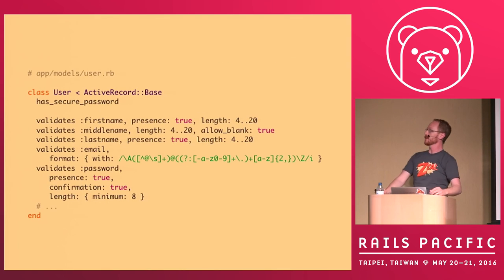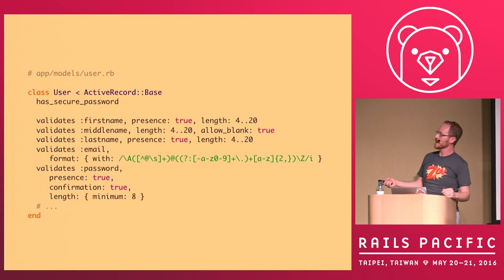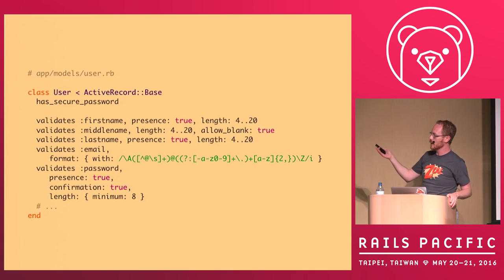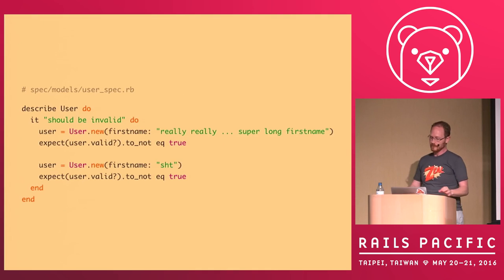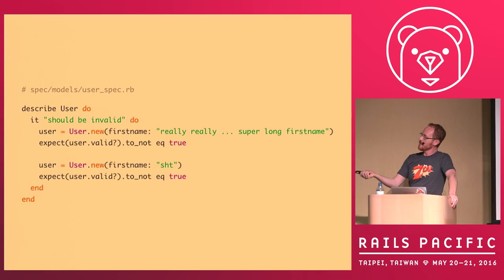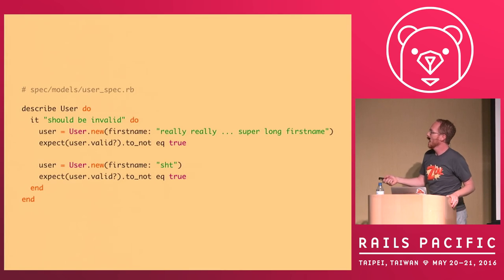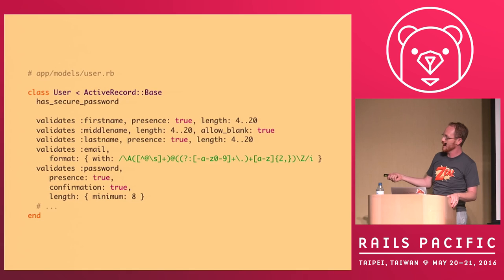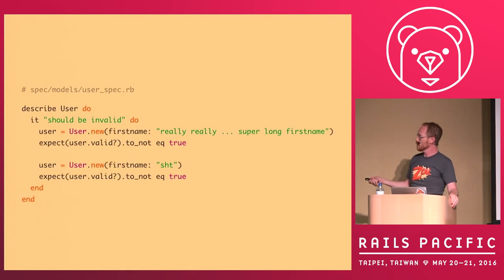Inside our Rails application we have a user model. The biggest chunk we're going to focus on is the validations: validates the presence of a first name, the length of it, middle name, last name, email, and in a certain format. We open up our user spec and we describe the user. We run our first assertion — it says 'it should be invalid.' We create a user with a really super long first name, because the length has to be between four and 20 characters, and then we see that the valid object is now not true.